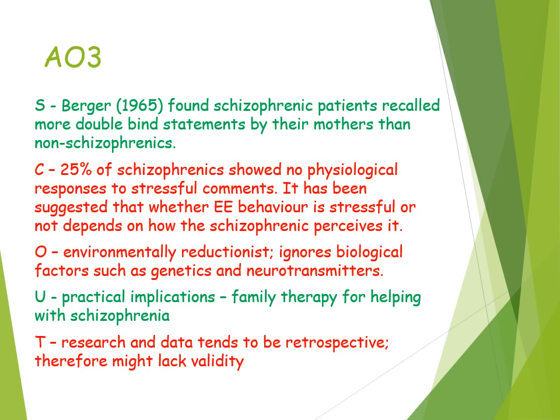A further weakness is that the family dysfunction explanation is environmentally reductionist — it solely focuses on family and environmental factors such as communication styles, completely ignoring biological factors and the nature side of the nature-nurture debate, such as genetic factors or neurotransmitters like dopamine, which has been found to have links with schizophrenia. However, there are practical applications: this research has led to family therapy being developed, which has been found to be an effective treatment for schizophrenia, supporting the value of psychological research into family dysfunction.